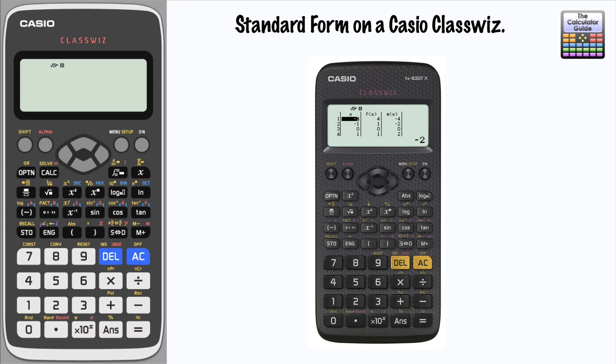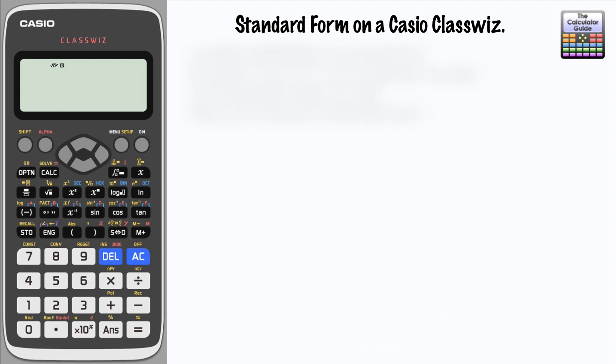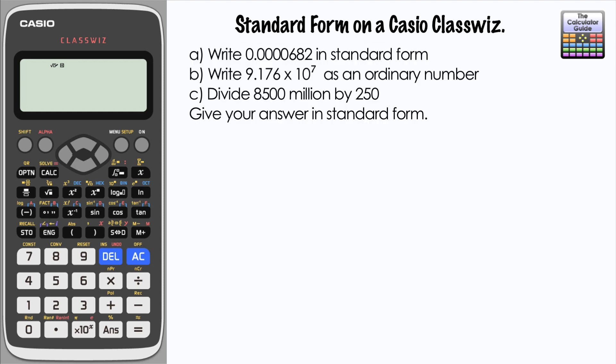Let's take a look at the question. We'll just do this in three separate parts. So part A: write 0.0000682 in standard form. Now it really is up to you whether you want to use the calculator for this.